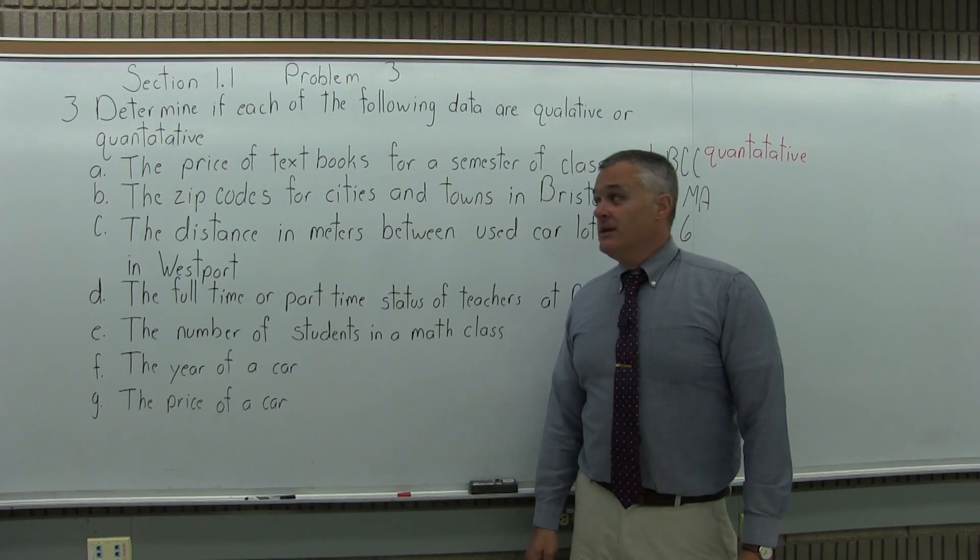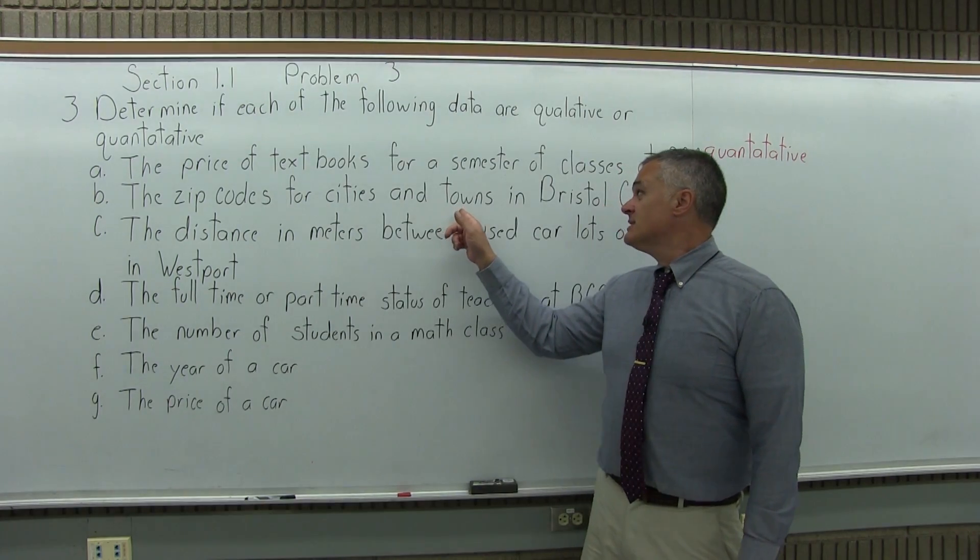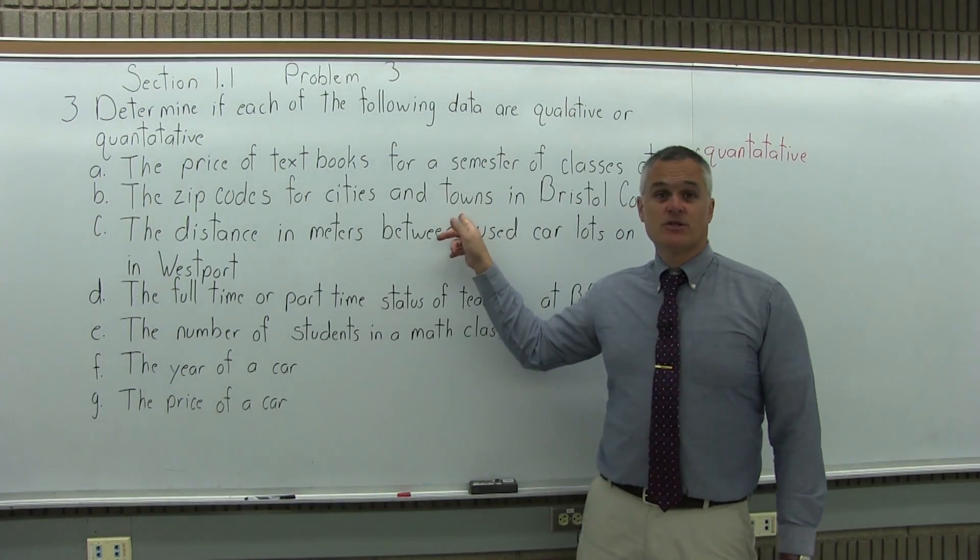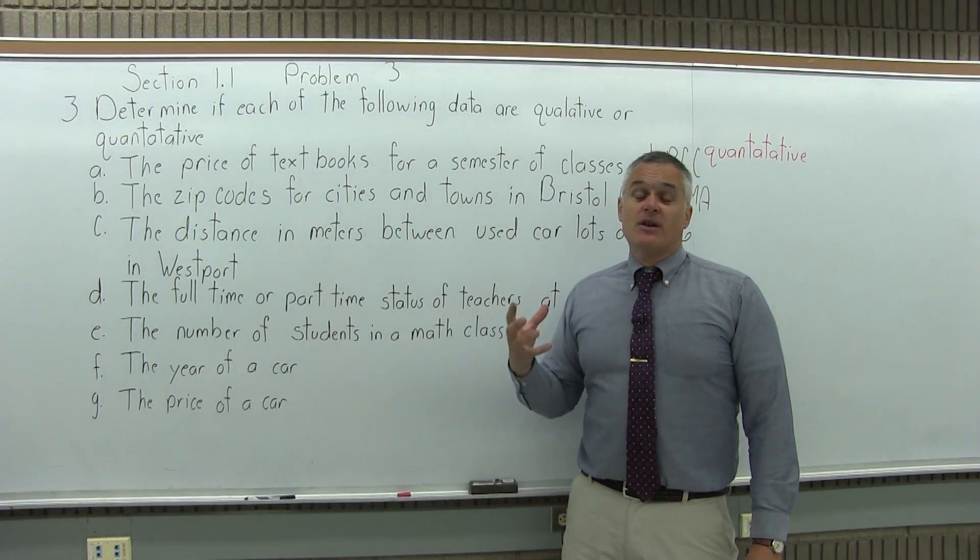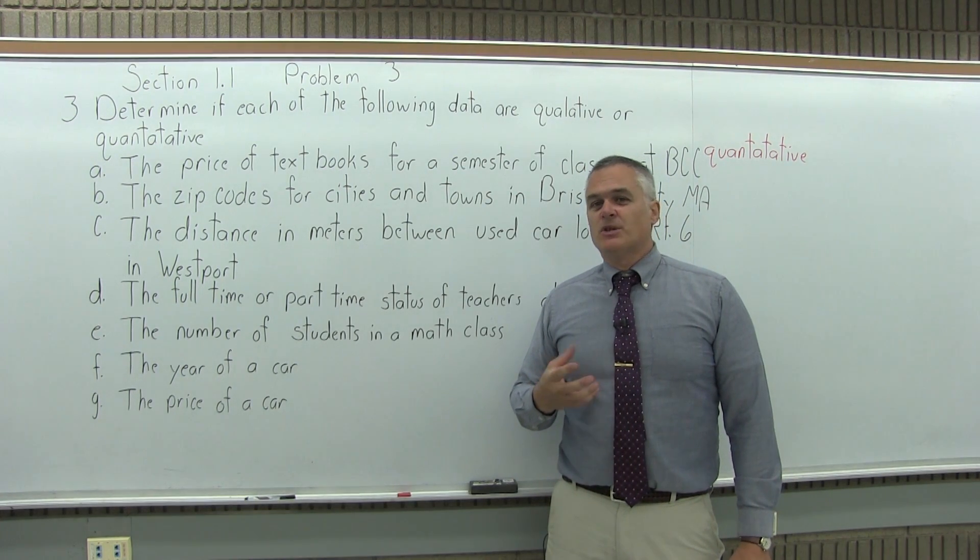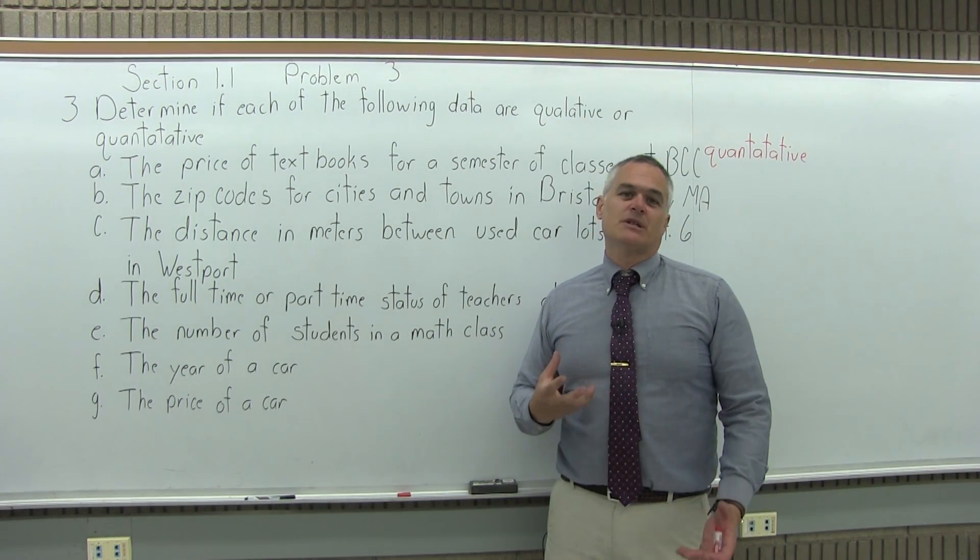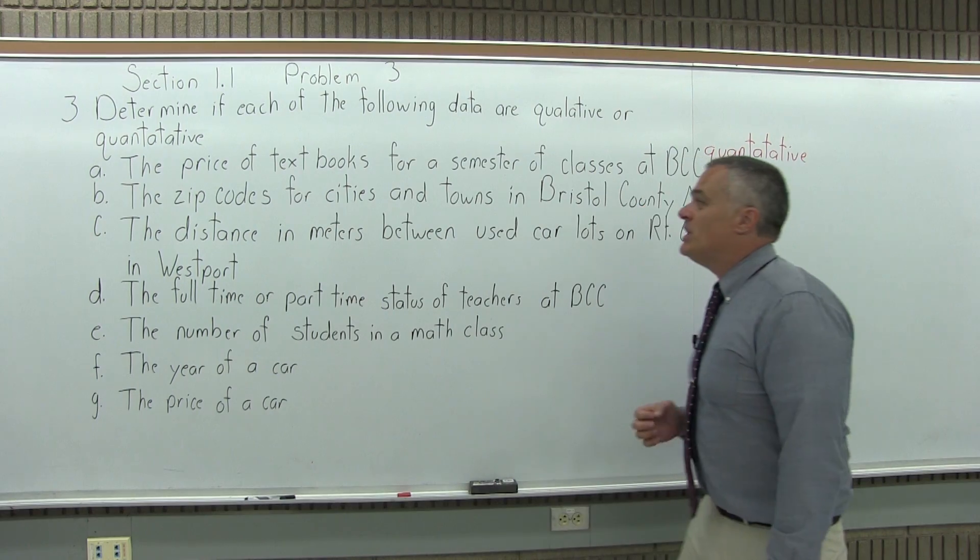And B, the zip codes for the cities and towns in Bristol County, Massachusetts. So these are numbers that you're getting for zip codes, but they don't measure a quantity of something, it is really just a label. So B would be qualitative.